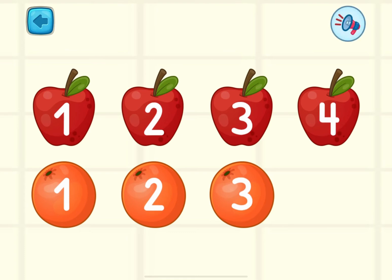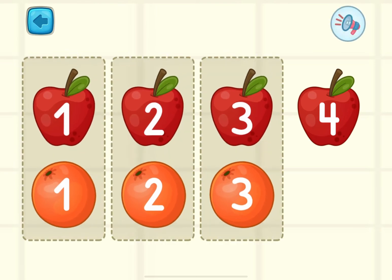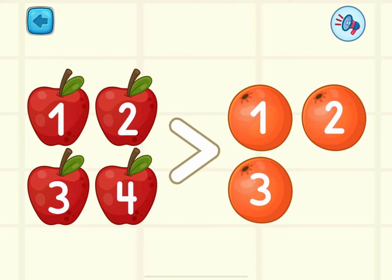Let's imagine that we have four apples and three oranges. What do you think? Are there more apples or oranges? You need to make a pair for each object to understand it. We see that there is no pair for the fourth apple, and that means there are more apples than oranges.